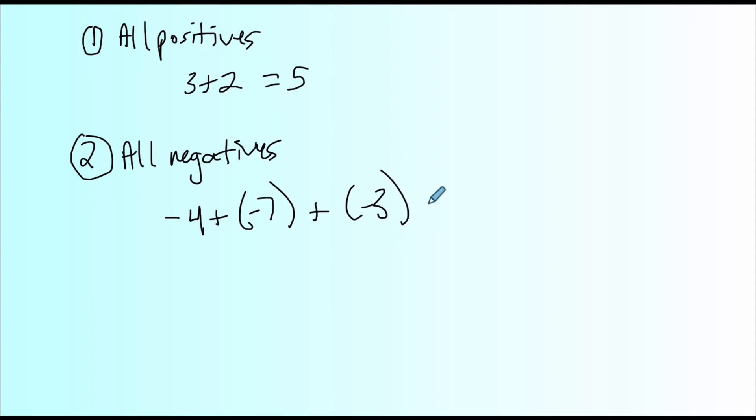If your numbers are all negative, one way I explained this was think of it as if you owe someone money, as if you are in debt. You have four dollars of debt, that's represented by -4. Seven dollars of debt, that's represented by -7. And three dollars of debt represented by -3.